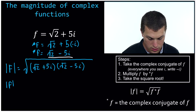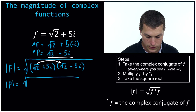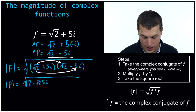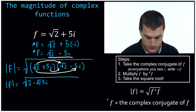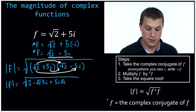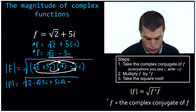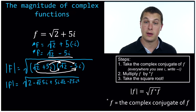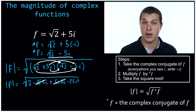The first numbers are square root of 2 and square root of 2, so we multiply square root of 2 by square root of 2, and we get 2. Then we do the outer numbers: square root of 2 and minus 5i gives us minus 5i times square root of 2. Then inner: plus 5i times square root of 2. And finally last, 5i times negative 5i gives us negative 25i squared. That looks like a big ugly mess, but the nice thing is that the minus 5i times square root of 2 and 5i times square root of 2 are exactly the same thing, so they cancel out.